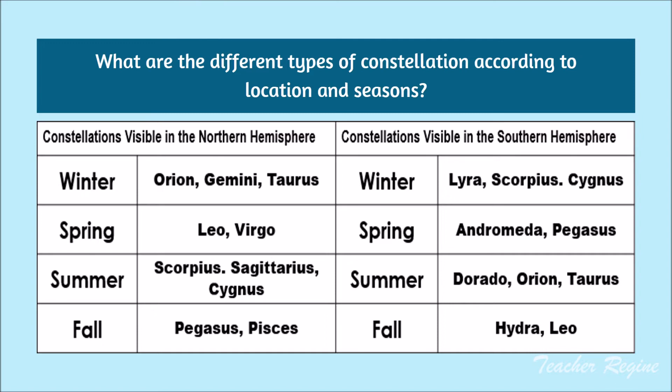Constellations visible in the Northern Hemisphere: during winter, we have Orion, Gemini, and Taurus; during spring, we have Leo and Virgo; during summer, we have Scorpius, Sagittarius, and Cygnus; and during fall, we have Pegasus and Pisces.